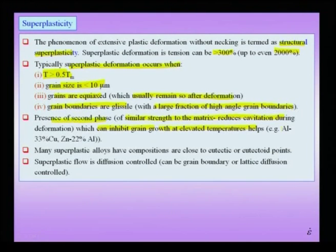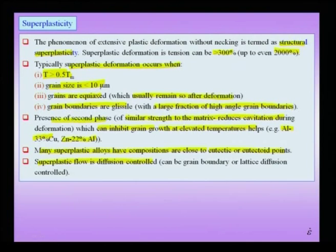Typical alloys found to have superplasticity include aluminum–33% copper and zinc–22% aluminum alloys. Many superplastic compositions are close to the eutectic or eutectoid points, meaning a eutectic or eutectoid composition helps. Superplastic deformation is diffusion controlled — either lattice diffusion or grain boundary diffusion. The contributing factors include material parameters such as composition, grain type and size, and process parameters such as temperature. Low strain rate actually promotes superplastic deformation.